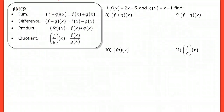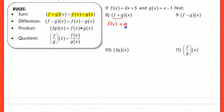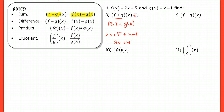Now this is objective 1 — finding the sum, the difference, the product, and the quotient of different functions. Looking at the notation: f plus g of x is equal to f of x plus g of x. In our first example, we're asked to find f plus g of x, so I simply take f of x and add g of x. Since both are linear: 2x plus 5 plus x minus 1 gives me 3x plus 4. So f plus g of x is equal to 3x plus 4.